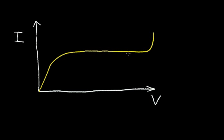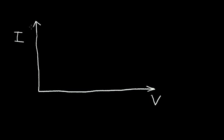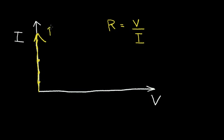Let's first start by understanding the current-voltage relationship for a resistor. Recall from Ohm's Law that resistance is equal to voltage divided by current. If I have a zero ohm resistor and I want to plot it on this graph, I would get points along the vertical axis. So a zero ohm resistor will plot like this — this is resistance equals zero ohms.